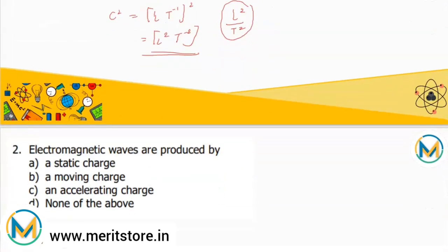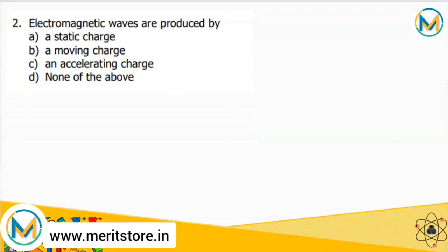The next question asks what produces electromagnetic waves: a static charge, a moving charge, an accelerating charge, or none of the above. An accelerating charge produces a changing electric field, which in turn produces a magnetic field. These alternately changing electric and magnetic fields give rise to electromagnetic waves. A static charge gives rise only to an electric field, and a moving charge creates a static magnetic field, so options A and B are incorrect. The correct answer is option C — an accelerating charge.